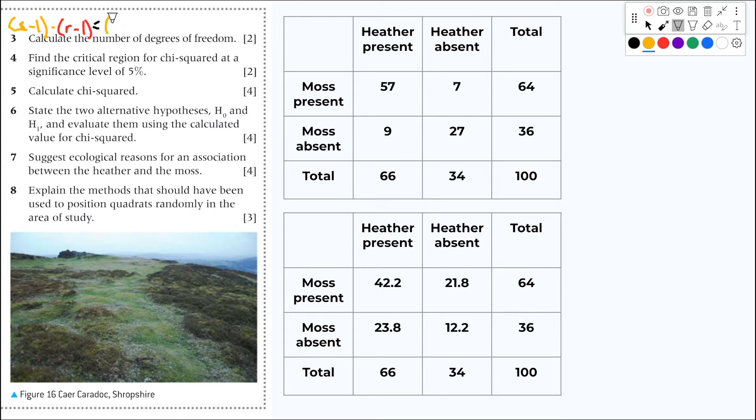That would be, I have two columns, two columns minus one. Well, that is one times two rows minus one. That's one as well. One times one equals one degree of freedom. You do this, you have two more marks. So I know now that I have one degree of freedom. I have my expected values. I have my observed values.